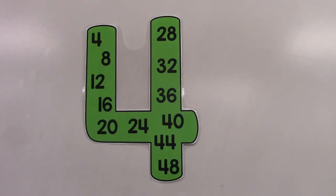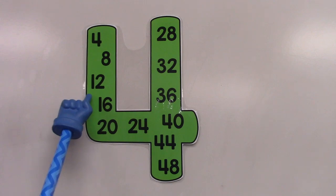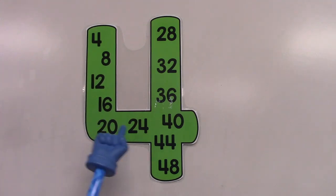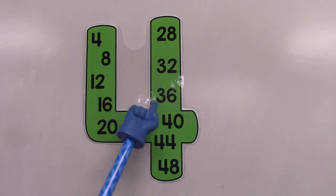Let's skip count by the number four. 4, 8, 12, 16, 20, 24, 28, 32, 36, 40, 44, and 48. Counting fours is really great.